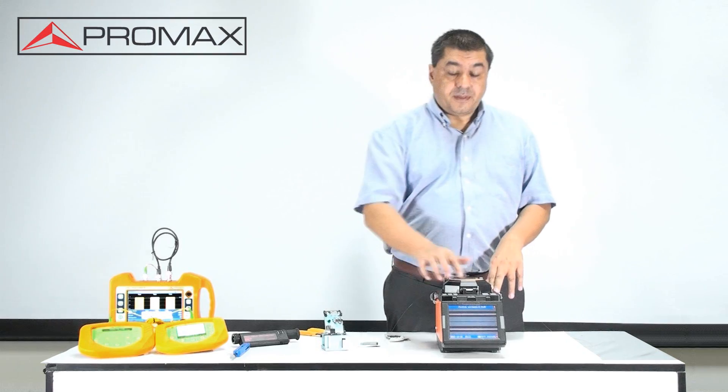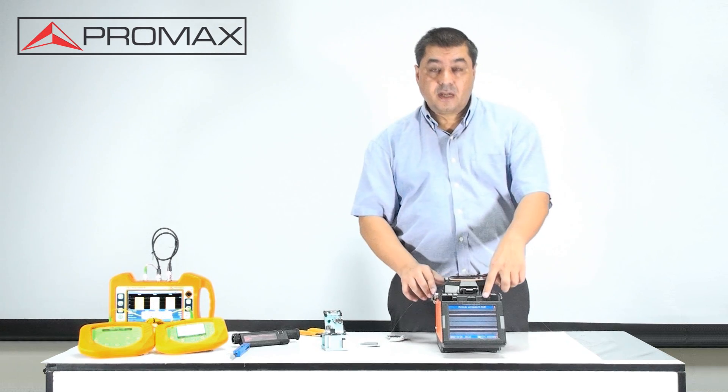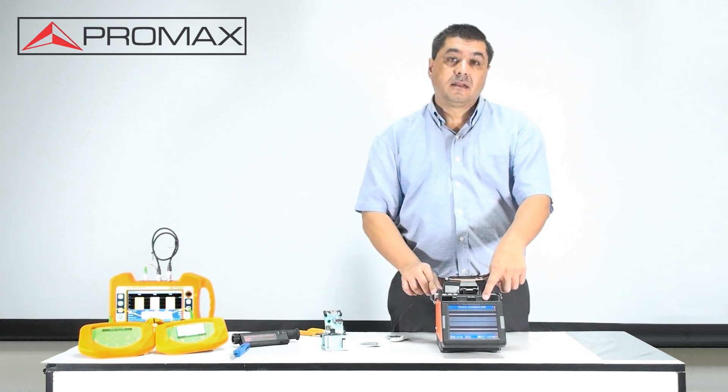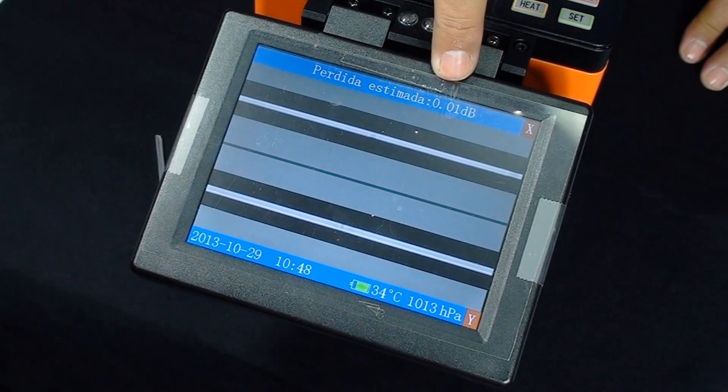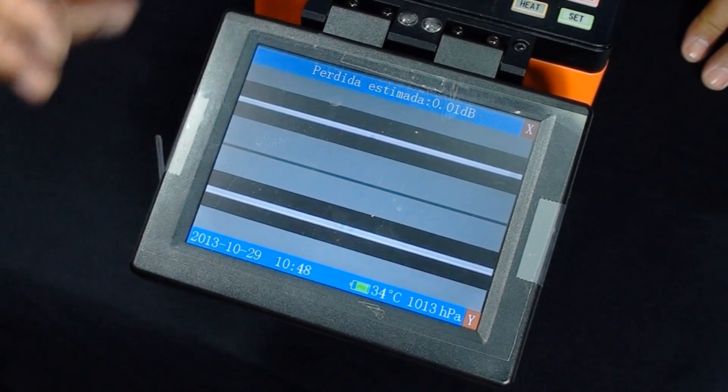After finishing the fusion splicer process, the device shows the fusion quality. We can see the estimated loss of 0.01 dB, therefore a lossless fusion.